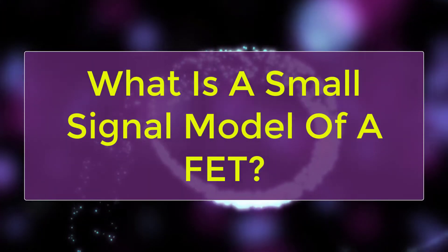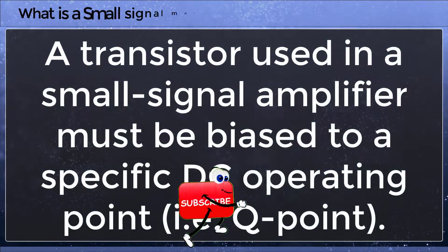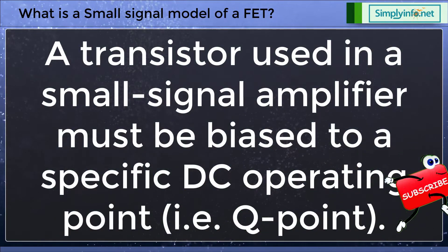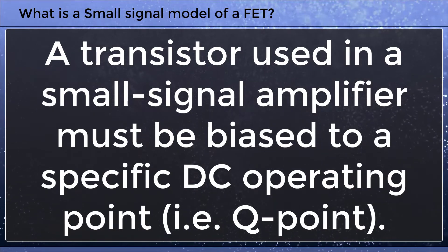What is a small signal model of a FET? A transistor used in a small signal amplifier must be biased to a specific DC operating point, that is Q point.